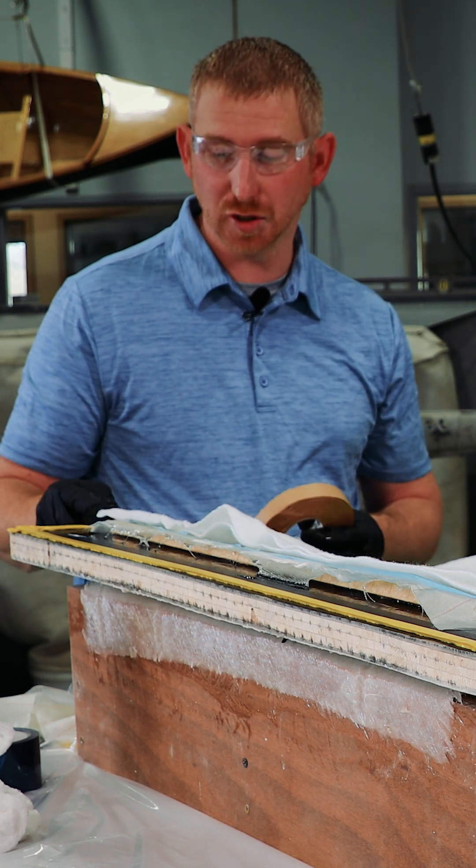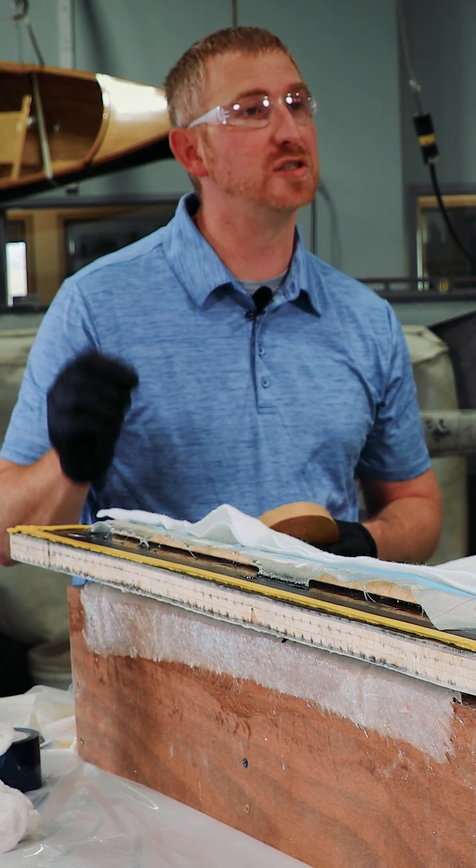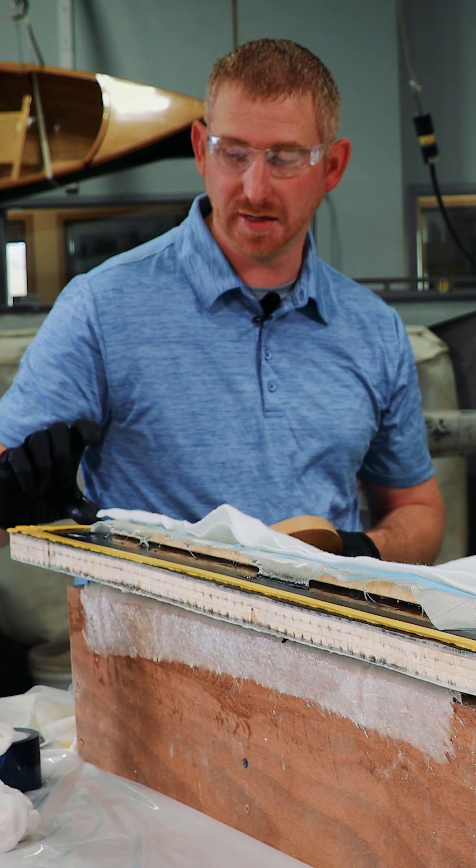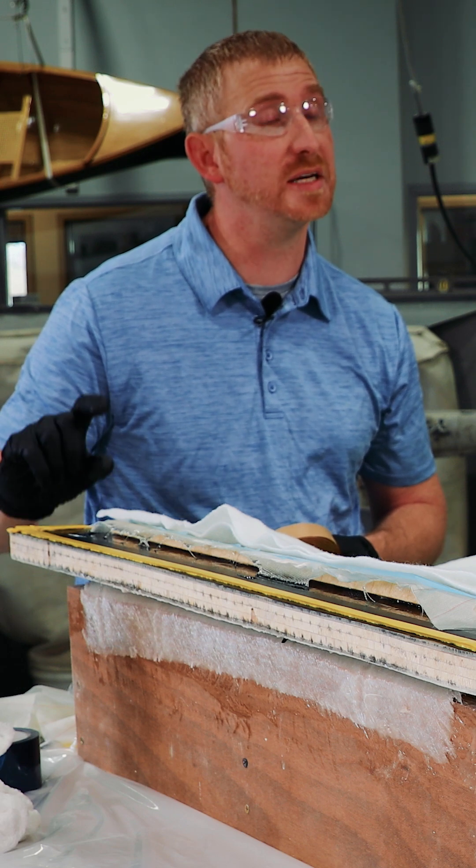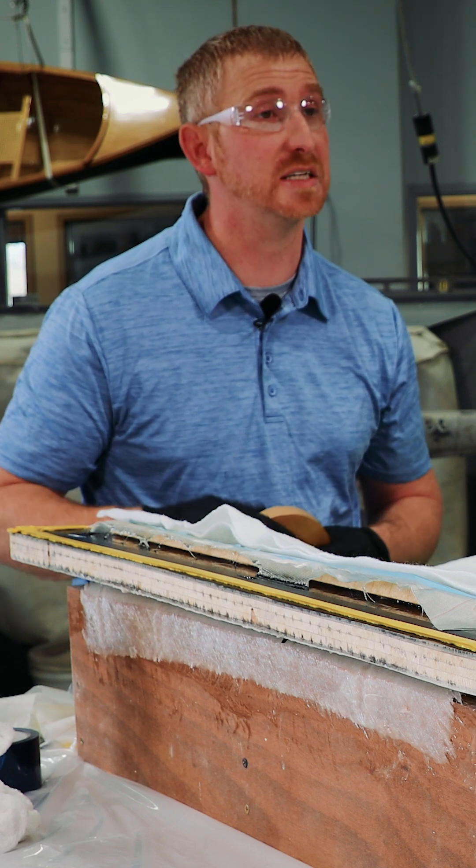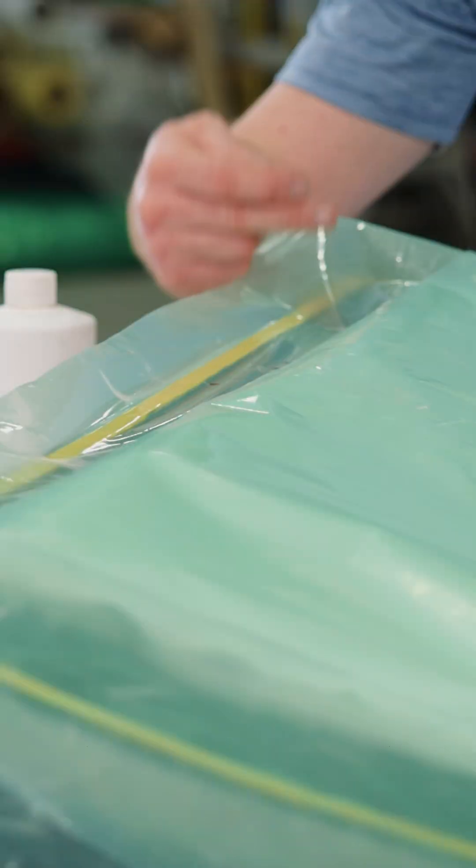You'll use sealant tape to go inside the film to ensure that it's sealed. That may vary on the size of the pleat depending on how much excess bag you have on the part. I'm gonna put a pleat in this area right here.